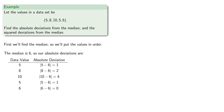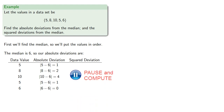We also want to find the squared deviations from the median, so we square each of those deviations. Those squared deviations will be 1 squared, 2 squared, 4 squared, 1 squared, and 0 squared.